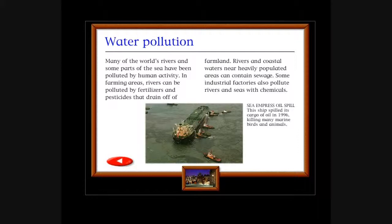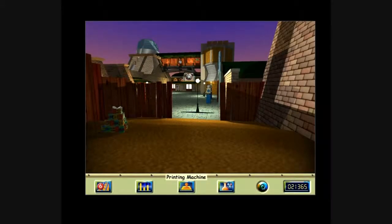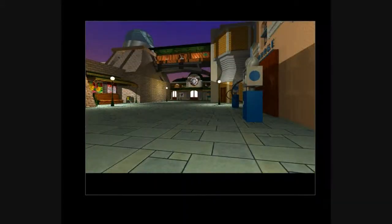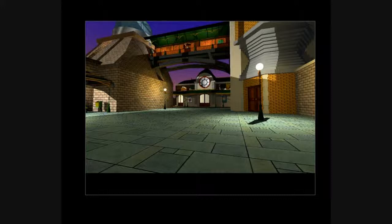Many of the world's rivers and some parts of the sea have been polluted by human activity. In farming areas, rivers can be polluted by fertilizers and pesticides that drain off farmland. Rivers and coastal waters near heavily populated areas can contain sewage. Some industrial factories also pollute rivers and seas with chemicals. Sea Empress oil spill: The ship spilled its cargo of oil in 1996, killing many marine birds and animals. Yes, and then let's put the Corexit in, kill some more, kill everything.